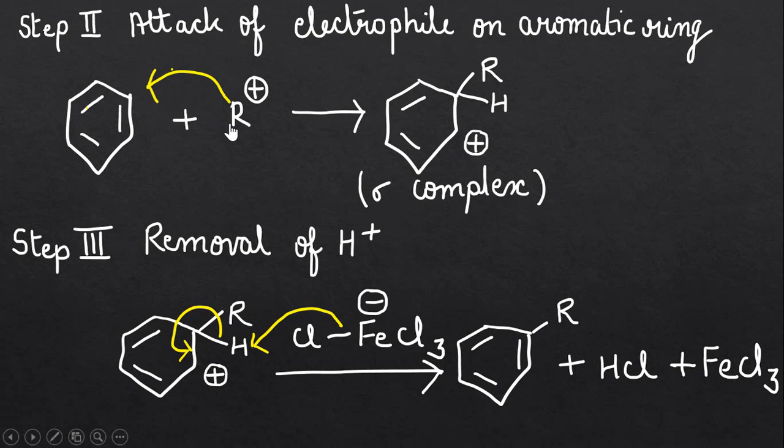Benzene acts as a nucleophile and the carbocation acts as the electrophile. The reaction takes place between a nucleophile and electrophile. This electrophile attacks on this carbon atom and the pi bond is broken. Now this carbon is attached to the alkyl group and gets a positive charge. This is called a sigma complex.